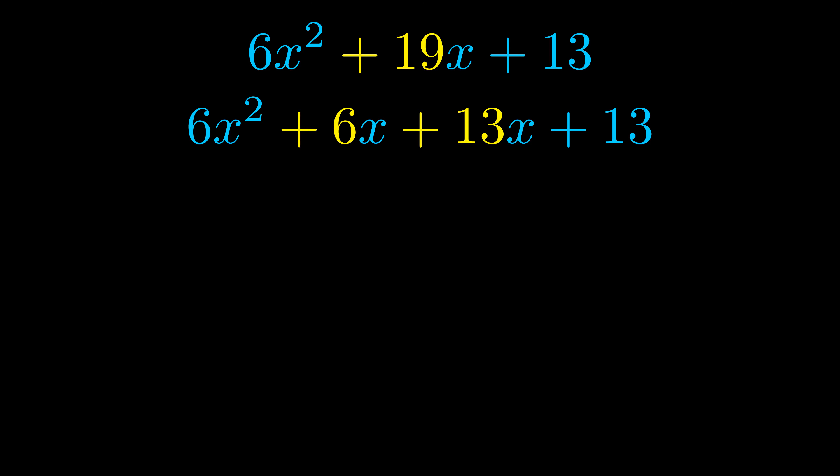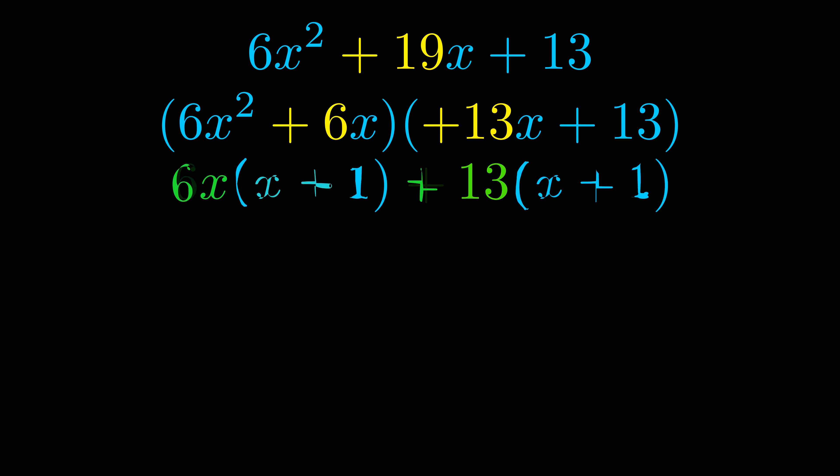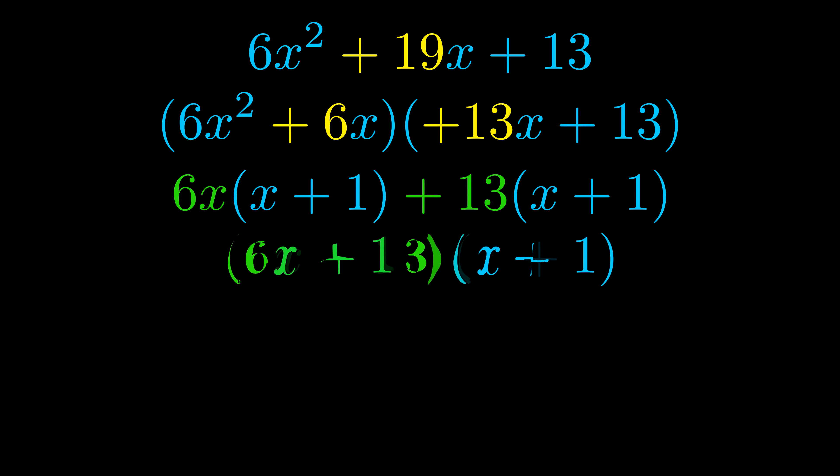Once we've done this we go ahead and we put parentheses around the first term and the last term. And we do that so that we can take the greatest common factor out of both terms. We can see the greatest common factor is now outside in green. Notice also how what remains inside of the parentheses is the same in both cases. The blue values are the same.